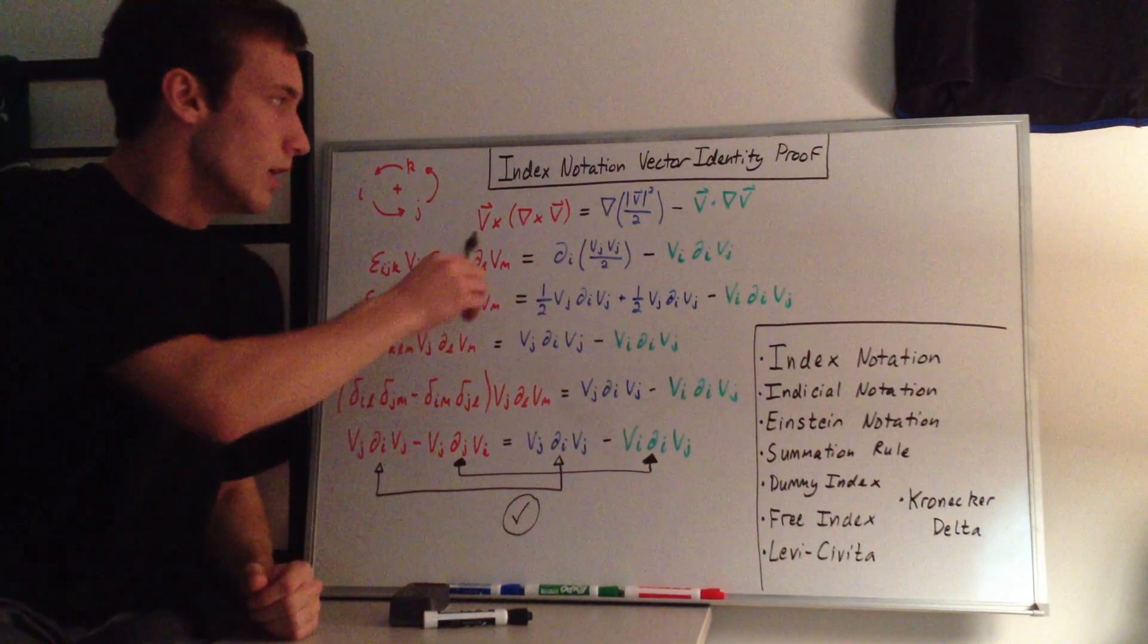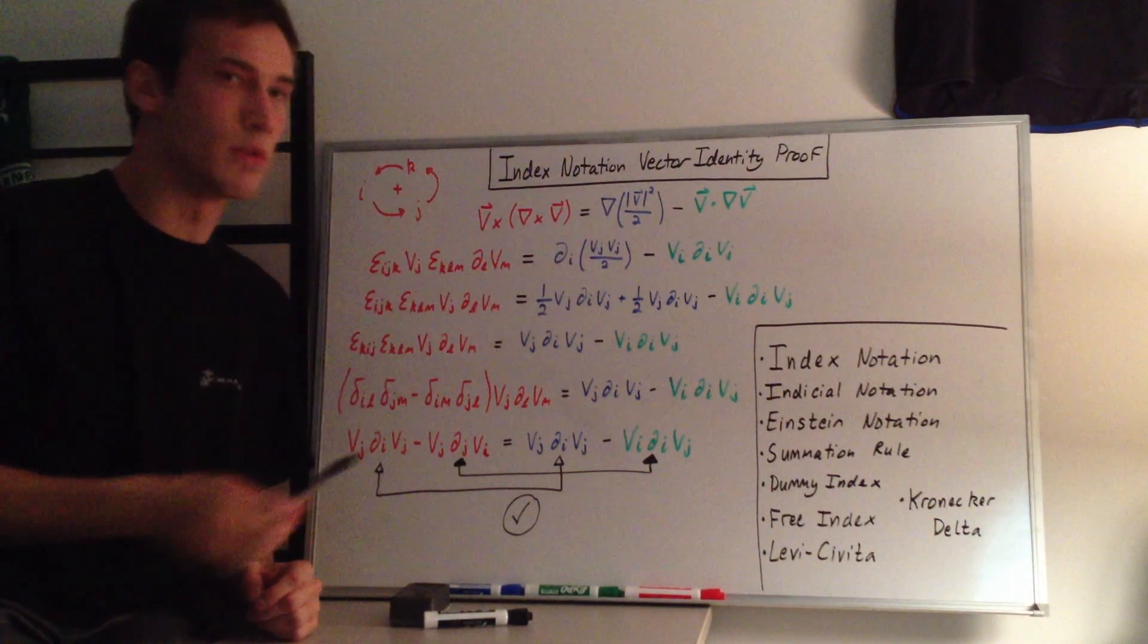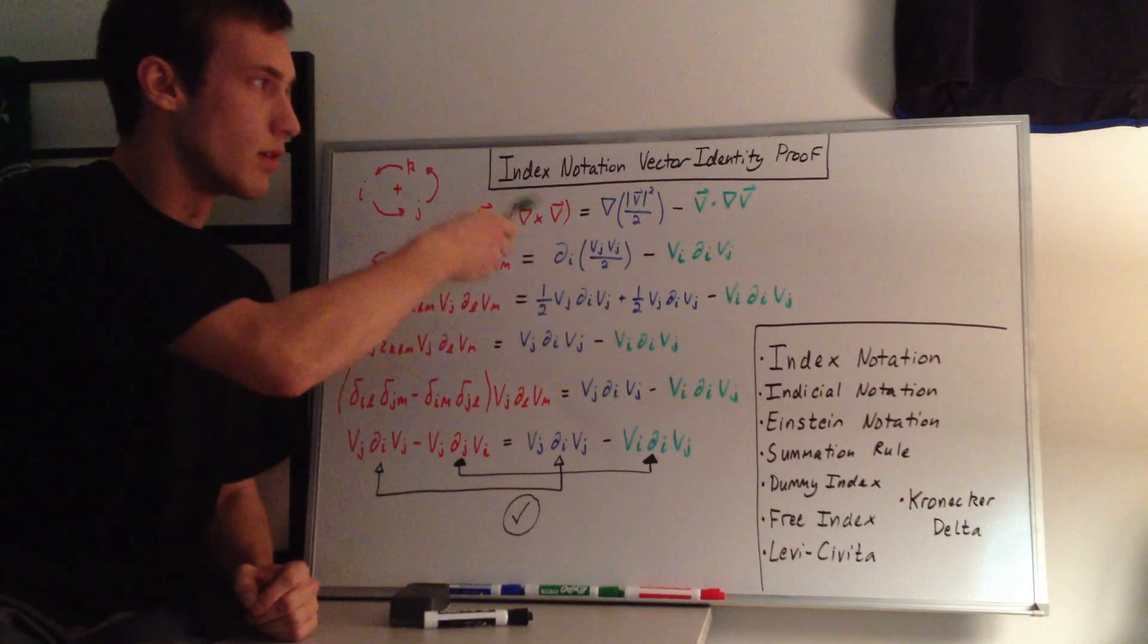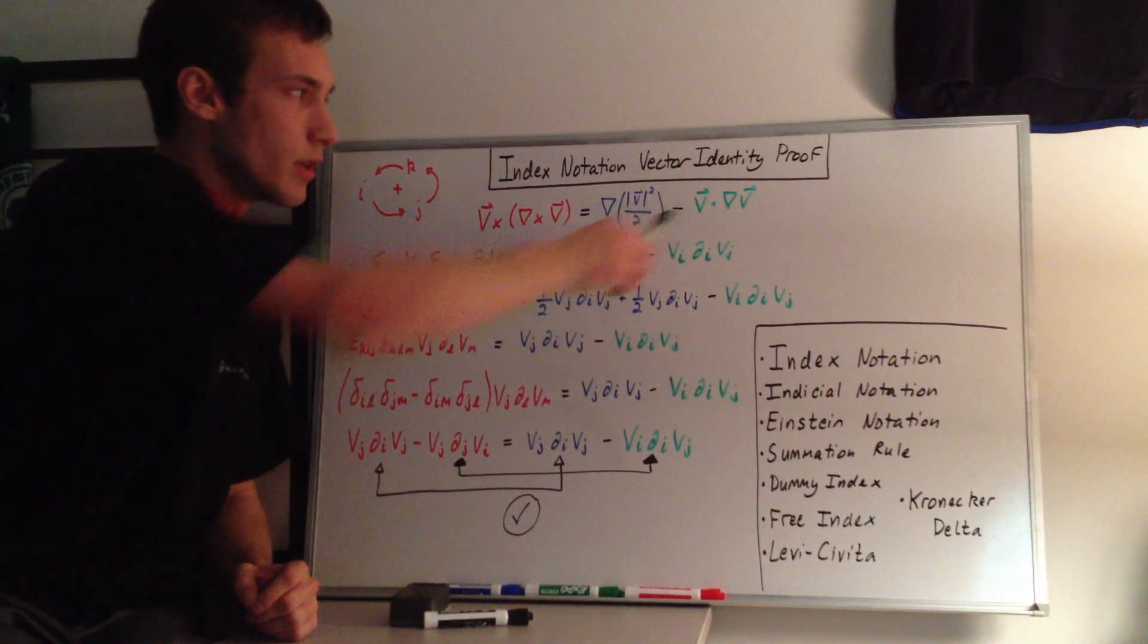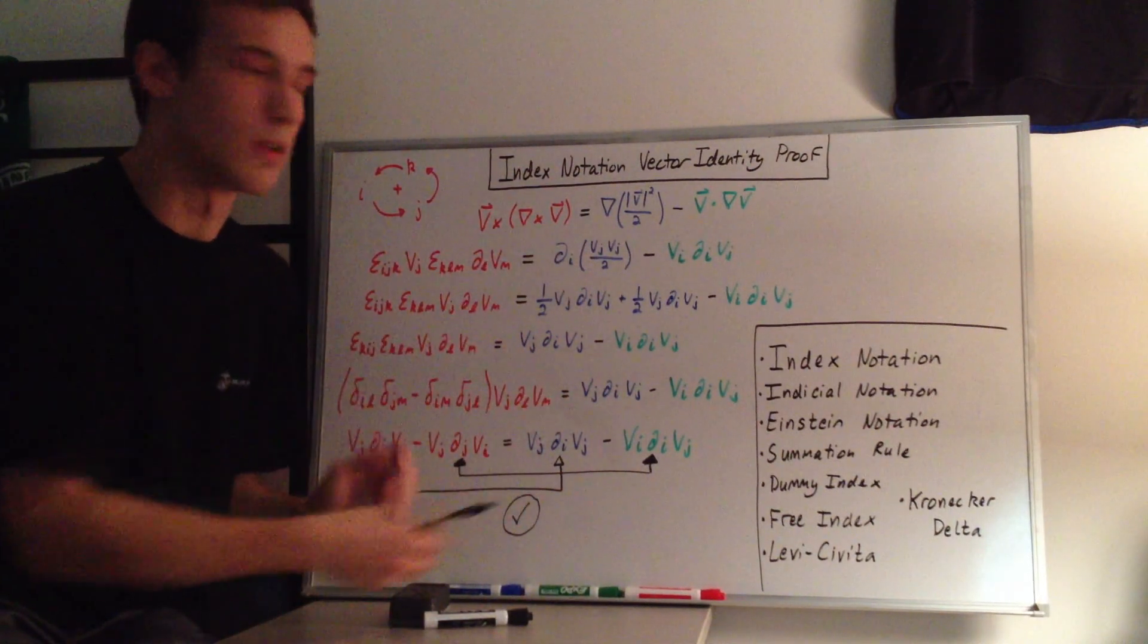Here is the vector identity that we're trying to prove. So I'm going to prove from both sides instead of just starting from one side and going through the whole derivation and then backing out what these are. I think it's easier to start with both sides and then go through and show that they equal each other in index notation.